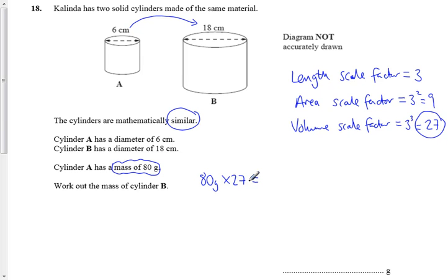So, just double down to the calculator, 80 times 27 is 2,160 grams, or 2.16 kilograms. That's going to be the mass of Cylinder B.